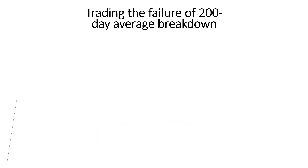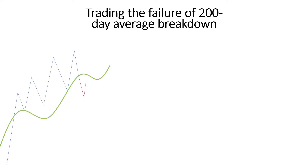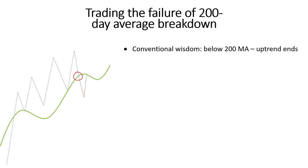I am assuming you know the basics of the 200-day average in this video, but essentially it is, as the name suggests, a moving average of price over a period of 200 days. It provides investors an objective way of identifying the long-term trend. Now in normal circumstances, a move below the rising 200-day average is considered a major bearish development, as it objectively tells us that the long-term trend has ended.